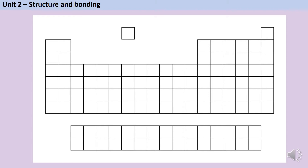We can find this information out by looking at the periodic table. Metals are found on the left of the table and non-metals on the right. The easiest way to separate them is by drawing a line here, or depending on the specification you follow, possibly here. It doesn't matter that there are a few elements which are between the two lines, because these metalloids or semi-metals, which have some properties of metals and some properties of non-metals, are not examined at all in GCSE chemistry.